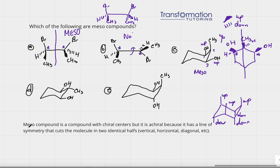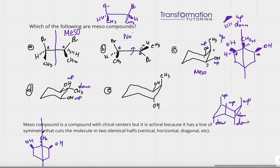Molecule D is similar. Converting from the chair: one substituent is up, one is down, and one is up. So I draw wedge OH, dash CH3 (or the corresponding group), and wedge OH. All three molecules C, D, and E have the same substituents and therefore have chiral centers. For molecule D, is there a line of symmetry through the center? Yes, there is — the CH3 falls on the line of symmetry and the two halves are exactly identical, so molecule D is also a meso compound.